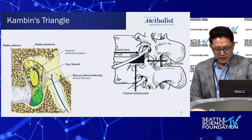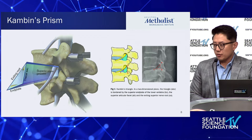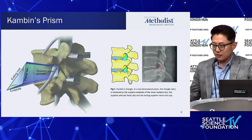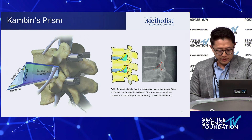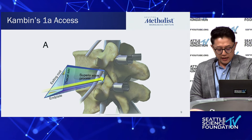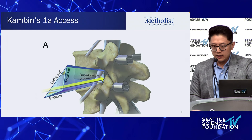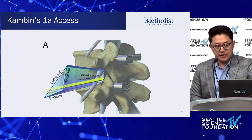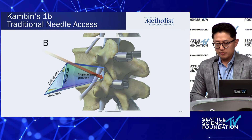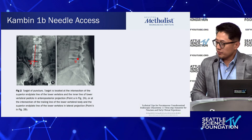Regarding Kambin's triangle — the safe zone we're trying to access is this region, and the triangle was reclassified into a prism back in 2019. That makes sense from our perspective because we're working around the normal structure; as a fusion surgeon you don't consider the facet joint, but we must consider the volumetric boundaries including the facet joint. The 1a axis is a direct inline approach straight into the disc for discectomy and fusion, and the 1b axis is the more traditional way, targeting the part of the prism furthest from the exiting nerve root — at the medial border of the pedicle and the pedicle-vertebral junction below.